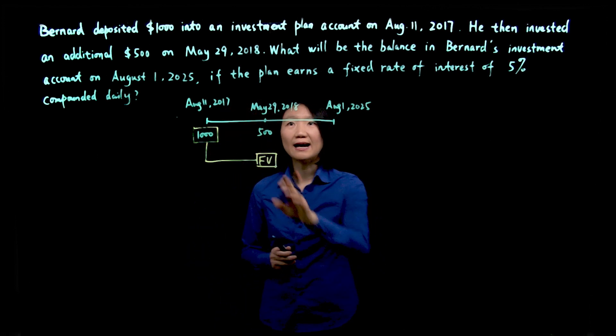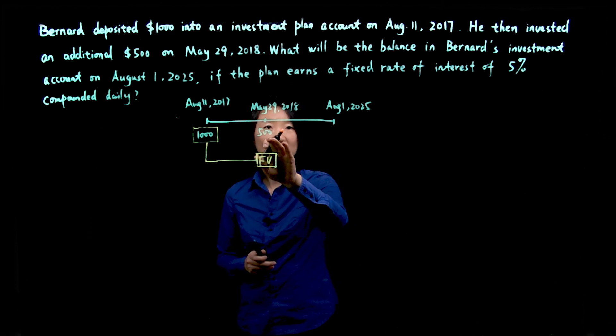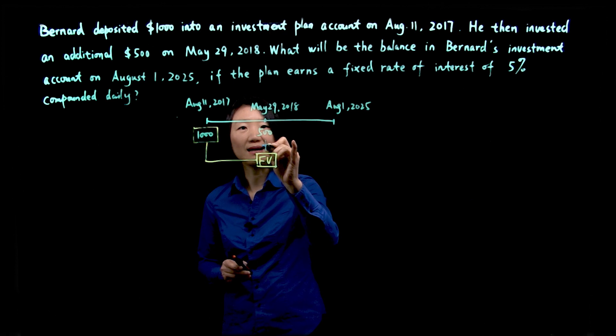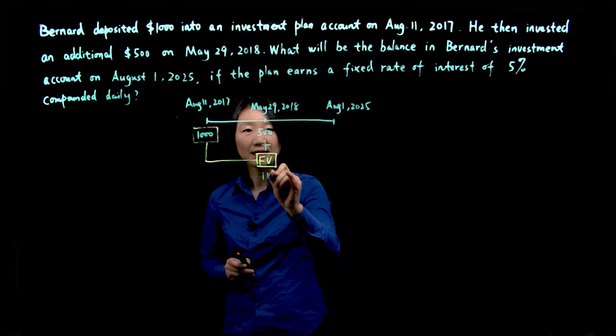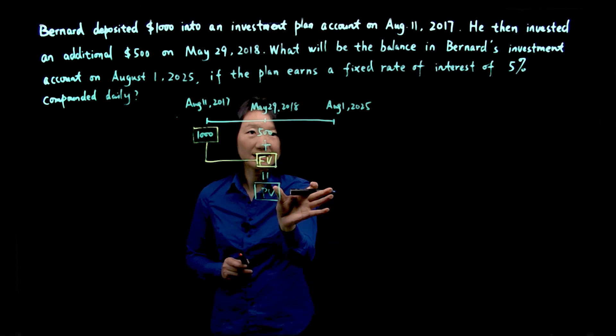But then on May 29, 2018, we made an additional deposit, so $500 plus the future value of the $1,000 becomes our new present value for the second step.